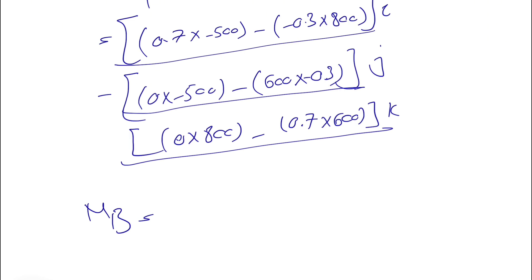So if we calculate this, we'll get -110 for I, -180 for J. This will be 0, so we'll have -420K.